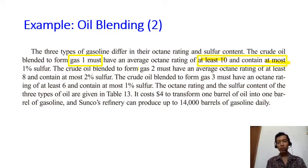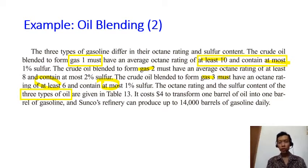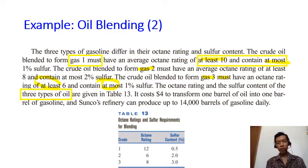We have constraints for gas one, gas two, and gas three. You can identify them because you see the words 'must,' 'at least,' and 'at most.' Those are the constraints for your final product, the gasoline. Because we manufacture those gases from crude oil, we also need to know the octane rating and the sulfur content for each crude oil, which are given in table 13.